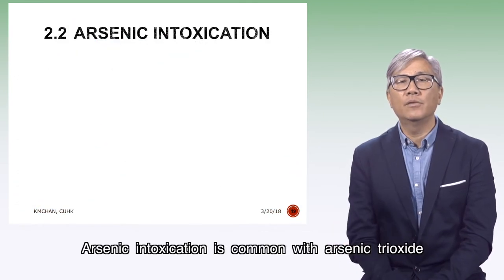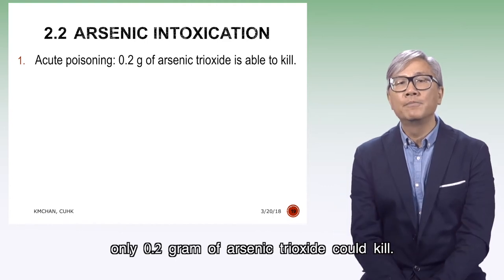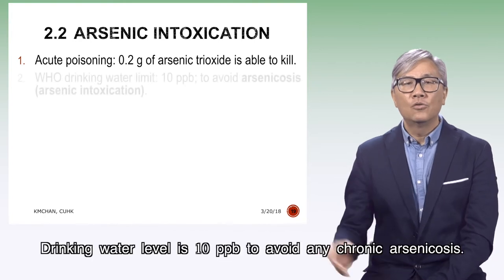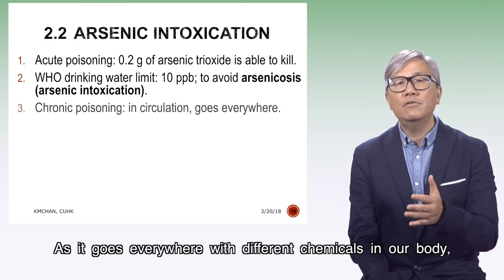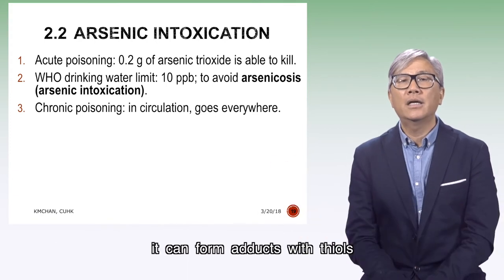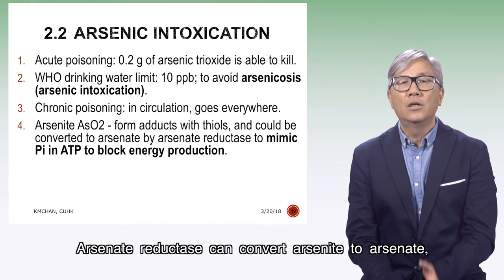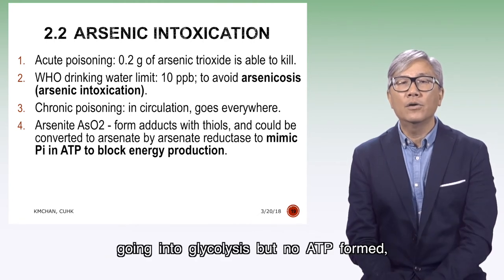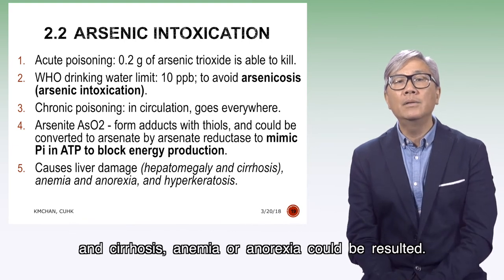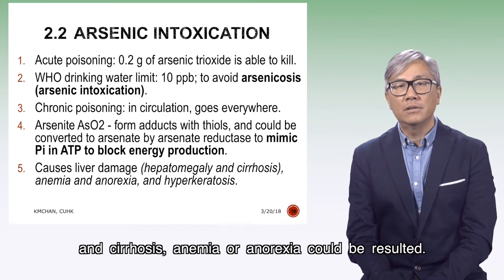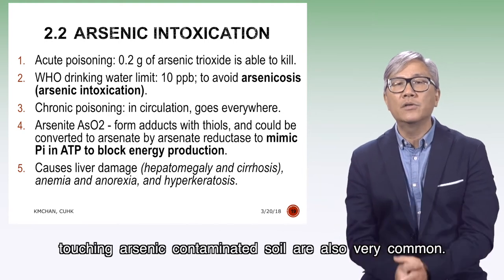Arsenic intoxication is common with arsenic trioxide. For its acute poisoning effects, only 0.2 grams of arsenic trioxide could kill. Drinking water level is set at 10 ppb to avoid chronic arsenic exposure. As it interacts with different chemicals in our body, it can form adducts with thiols and many other compounds. Arsenate reductase can convert arsenate to arsenite entering glycolysis but no ATP is formed, causing liver damage with hepatomegaly and cirrhosis, and anemia or anorexia may result. Hyperkeratosis in hands or feet in victims touching arsenate-contaminated soil is also very common.